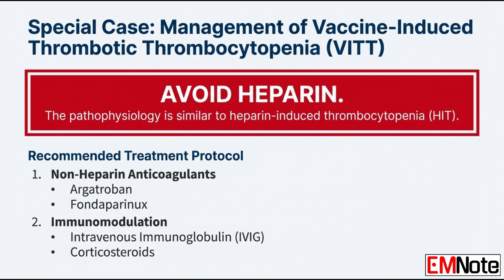For VITT specifically, you must avoid heparin and immediately transition to non-heparin anticoagulants — this is mandatory. Agents like argatroban or fondaparinux are used instead. This treatment must be combined with high-dose intravenous immunoglobulin and corticosteroids to address the underlying immune-mediated component. Missing that means missing the actual cause — that's the distinction every emergency physician and neurologist must know.